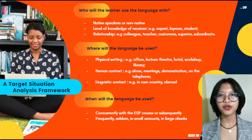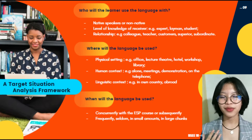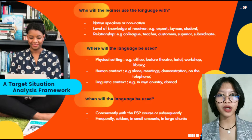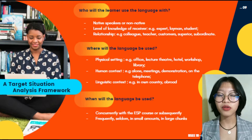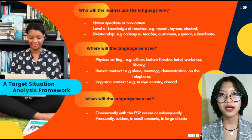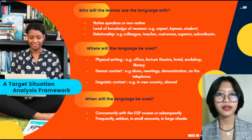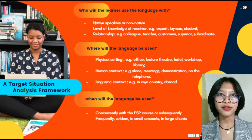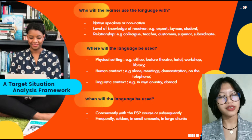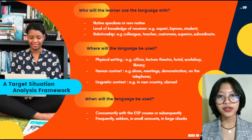The fourth target situation analysis framework question is: who will the learner use the language with? The learner can use the language with native speakers of that specific language, or non-native speakers who are still able to understand it. The learner should also consider the level of knowledge of the receiver — like an expert, layman, or student — as well as their relationship, such as communicating with colleagues, teachers, customers, superiors, or subordinates.